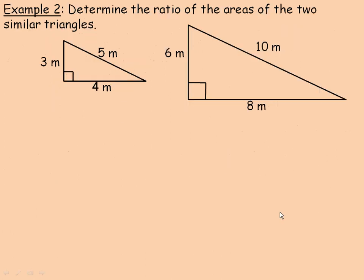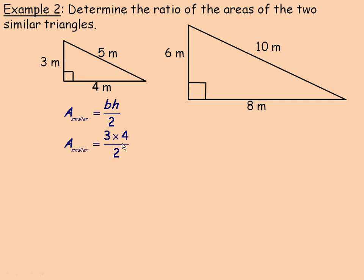On the second page, we're asked to determine the ratio of the areas of two similar triangles. Every side in the larger triangle is double the sides in the smaller one. The area of any triangle is base times height divided by 2. The base and height of the smaller triangle are 4 and 3, so the area is 3 times 4 divided by 2 — that's 12 divided by 2, which equals 6 square meters.